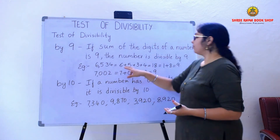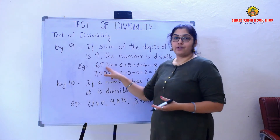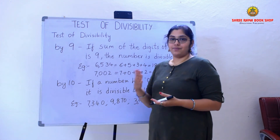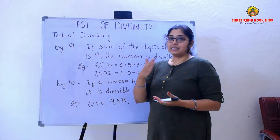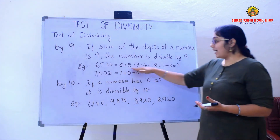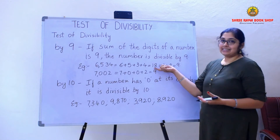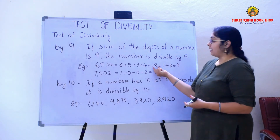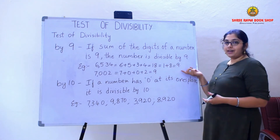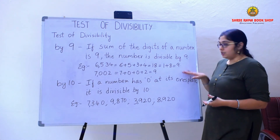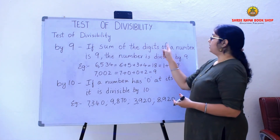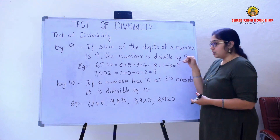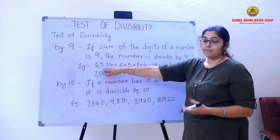On the board I have two examples. The first number is 6534. Adding all the digits: 6 plus 5 plus 3 plus 4. When I add all the digits, I am getting 18 as the sum. Again, 18 is a two-digit number, so adding again: 1 plus 8 gives a final sum of 9. So I can say that the number 6534 is divisible by 9.